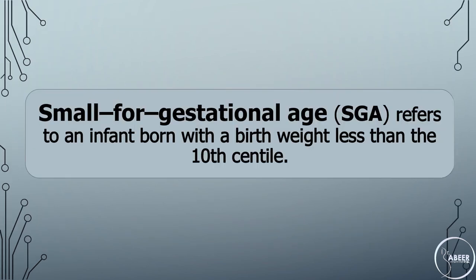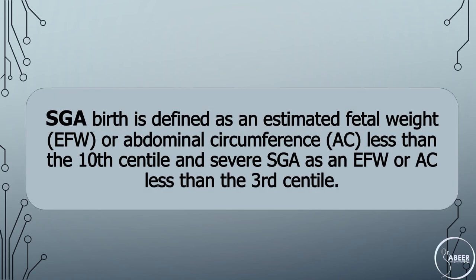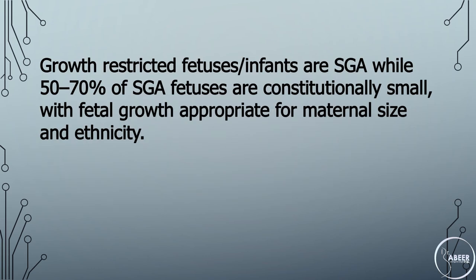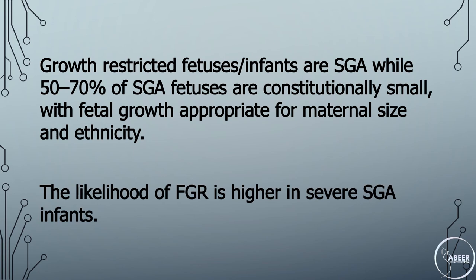Definitions: Small for Gestational Age (SGA) refers to an infant born with a birth weight less than the 10th centile. Small for gestational age fetus is defined as an estimated fetal weight or abdominal circumference less than the 10th centile, and severe SGA as an estimated fetal weight or abdominal circumference less than the 3rd centile. Growth-restricted fetuses or infants are small for gestational age, while 50–70% of SGA fetuses are constitutionally small.